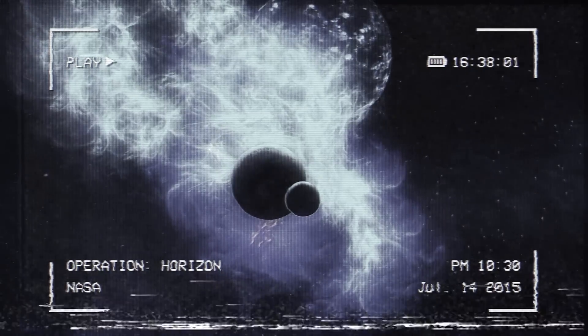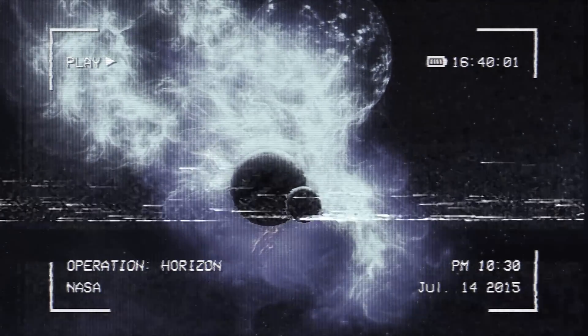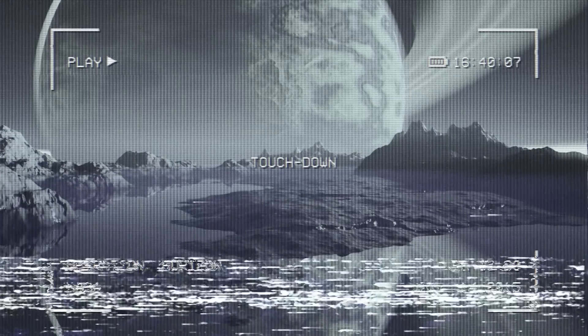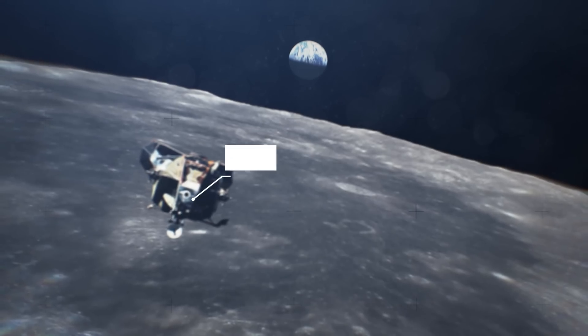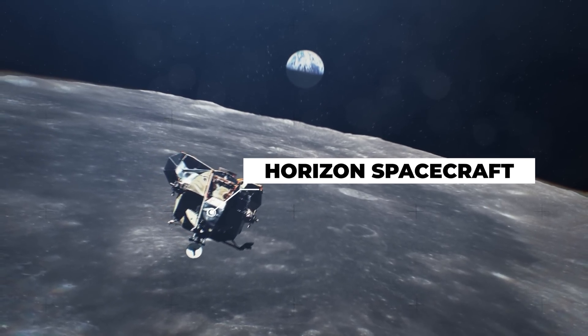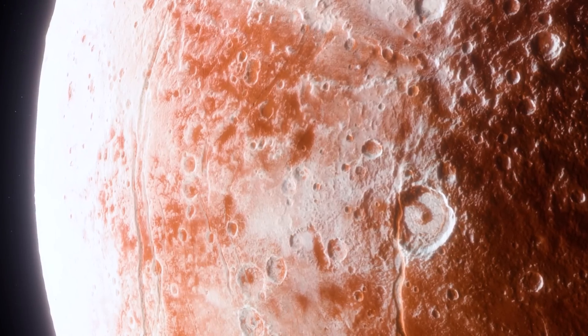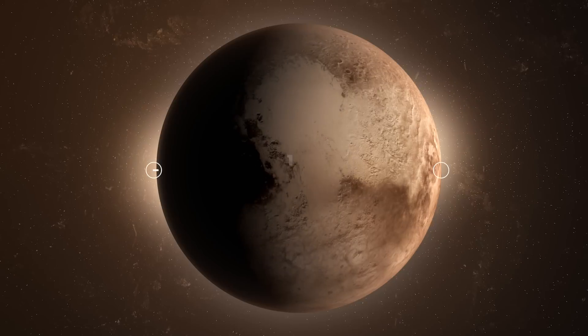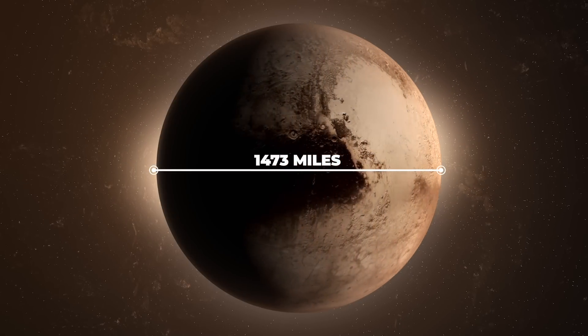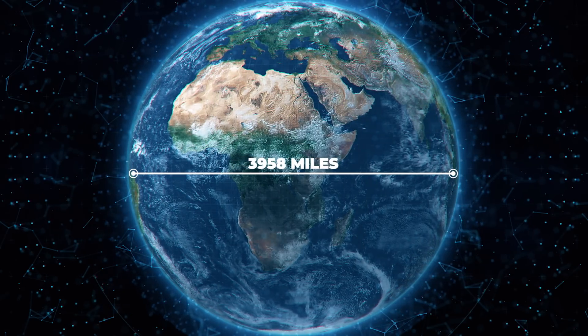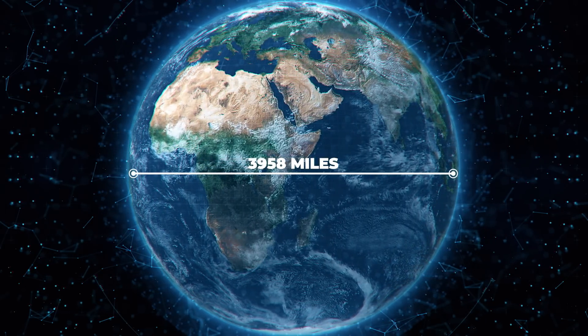It wasn't until 2015 that we were able to get a close-up look at Pluto thanks to NASA's New Horizons spacecraft. The flyby of Pluto yielded stunning images that showed a diverse range of surface features, measuring the diameter of Pluto at 1,473 miles, which is about one-fifth the size of Earth and smaller than our Moon.